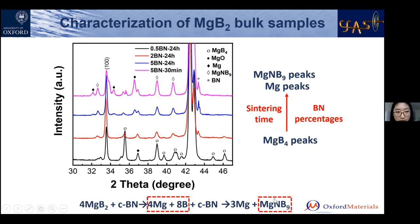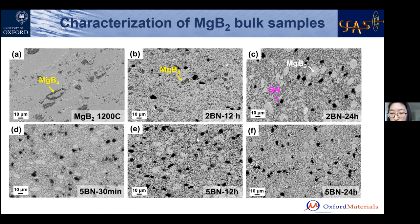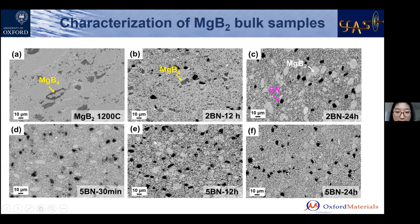SEM images show the macrostructure evolution. The undoped MgB₂ sample is homogeneous and consists of a large amount of MgB₄ phases. Addition of boron nitride destroys these macrostructures and island-like dense regions form, surrounded by a porous matrix. With longer milling and higher percentage of boron nitride, this morphology becomes more obvious.